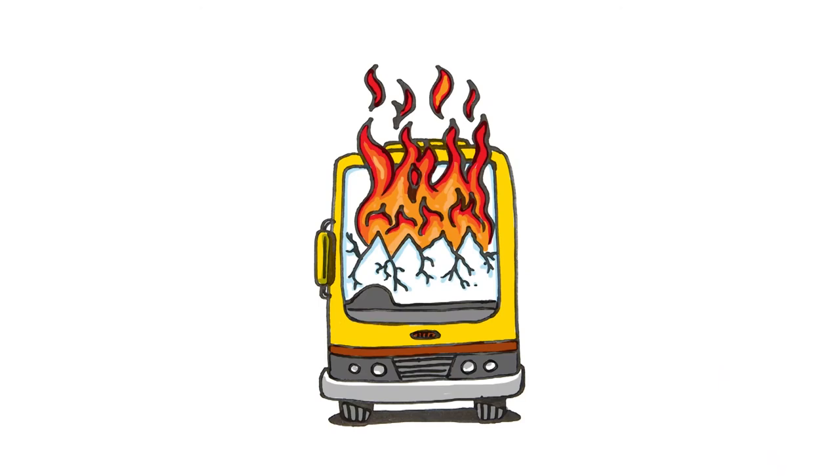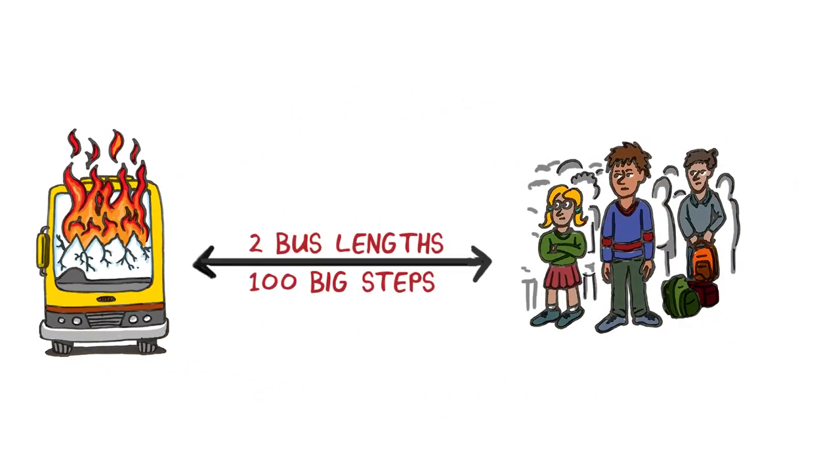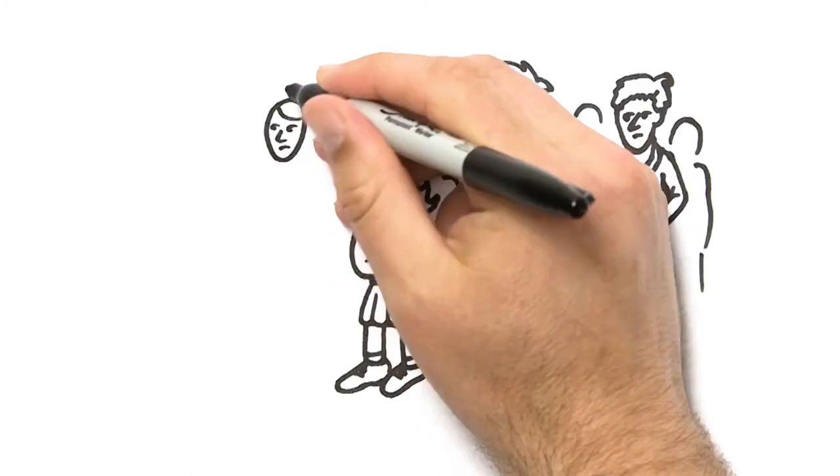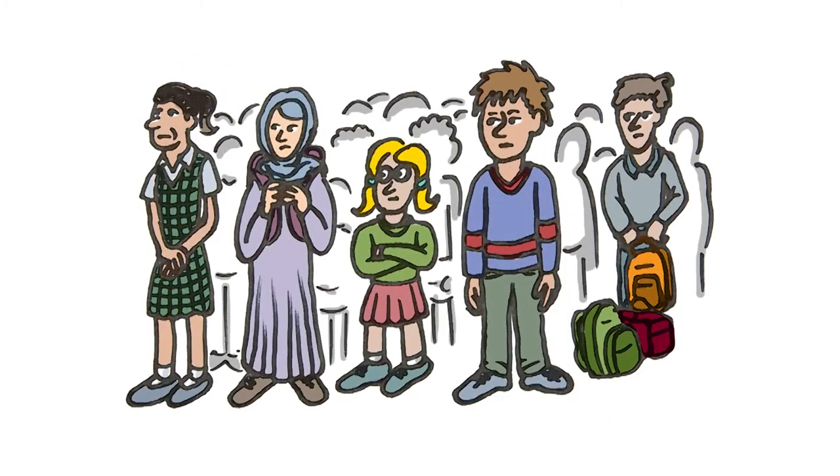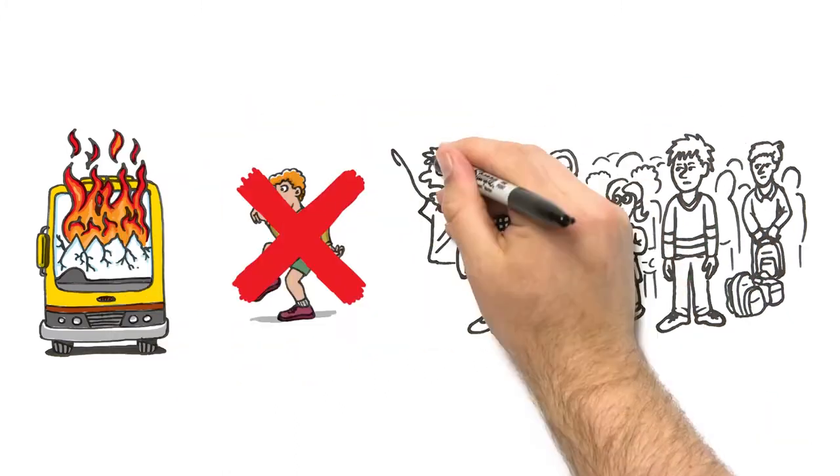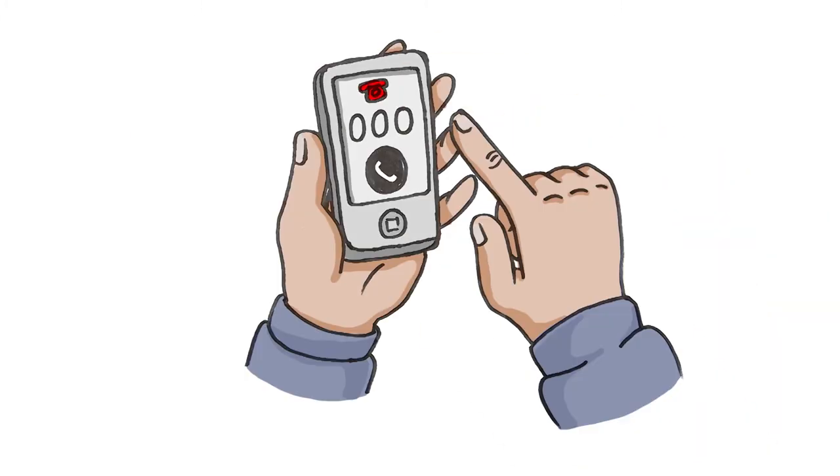Should a fire break out on the bus, move to a safe place well away from the bus, two lengths of the bus or 100 big steps. Assemble as a group in a safe place away from the bus and wait for help to arrive. Don't panic, stay calm, stay together. Do not go back to the bus for any reason. Dial triple zero.